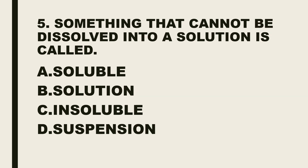Number 5. Something that cannot be dissolved in a solution is called: A. Soluble, B. Solution, C. Insoluble, D. Suspension.